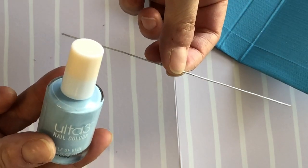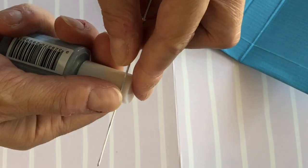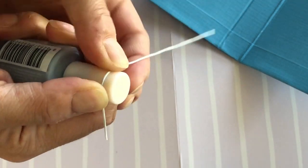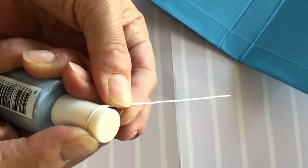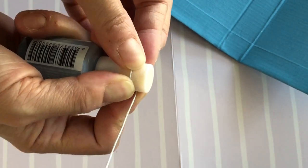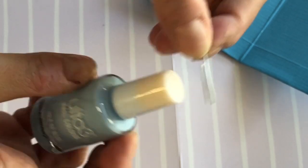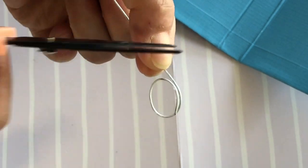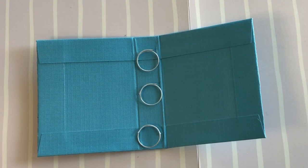For binder rings, we used florist wire. Shape the wire around the handle of a nail polish bottle. It has the correct dimension, overlapping the wire at the top. Cut away the excess wire. Make three rings.